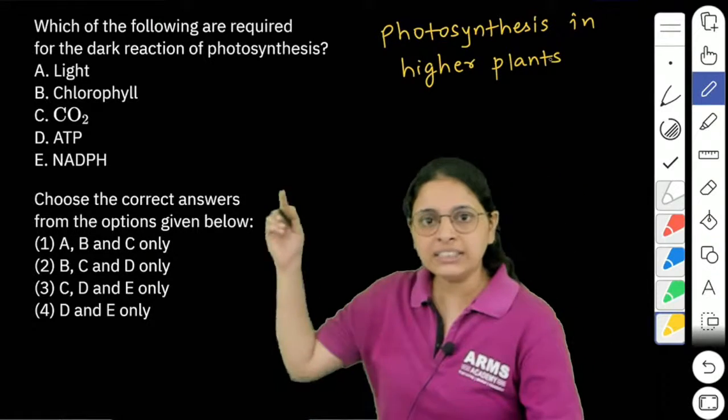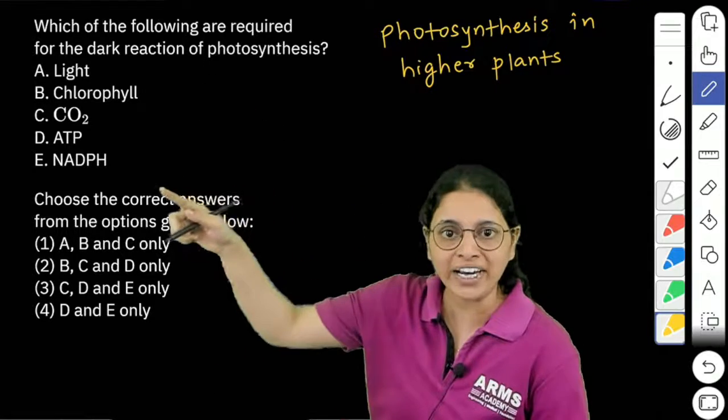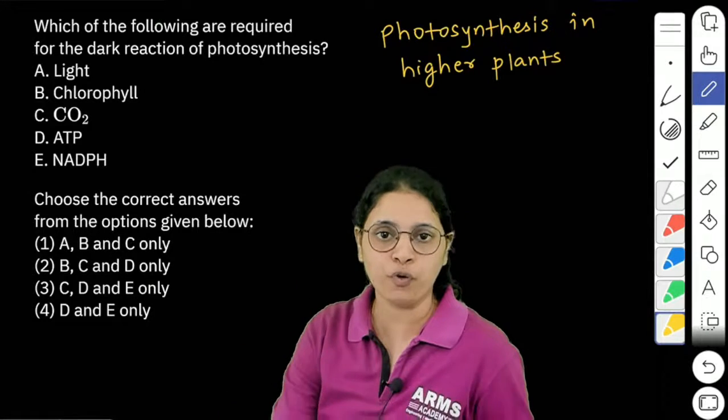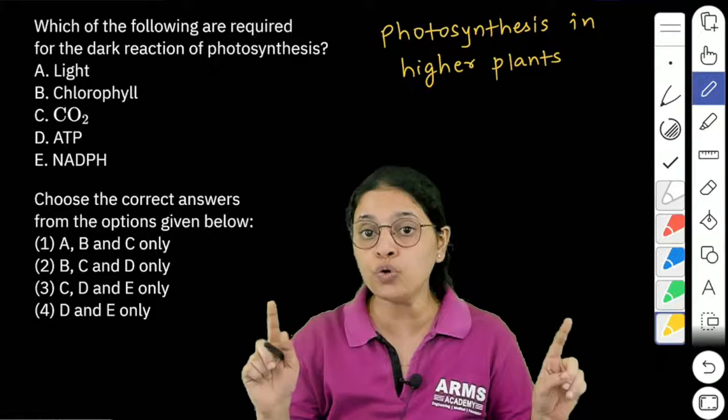So as we can see, here it has been asked which of these five materials are used in the dark reactions of photosynthesis. As we have studied, photosynthesis has two main phases,